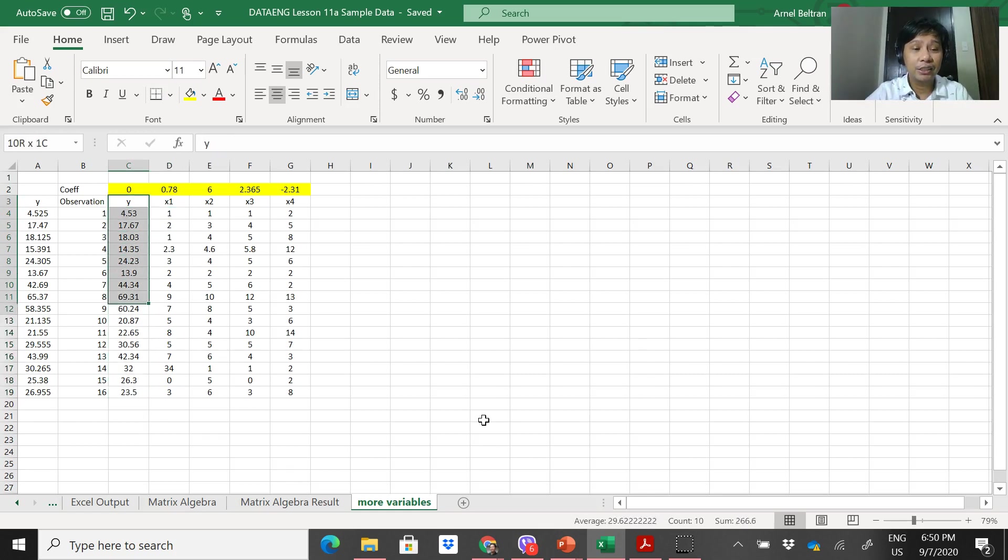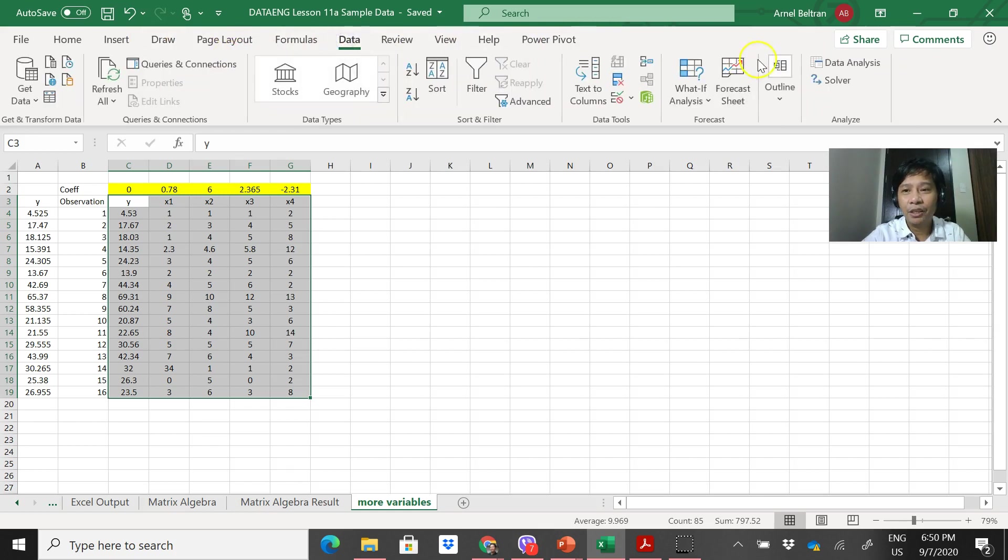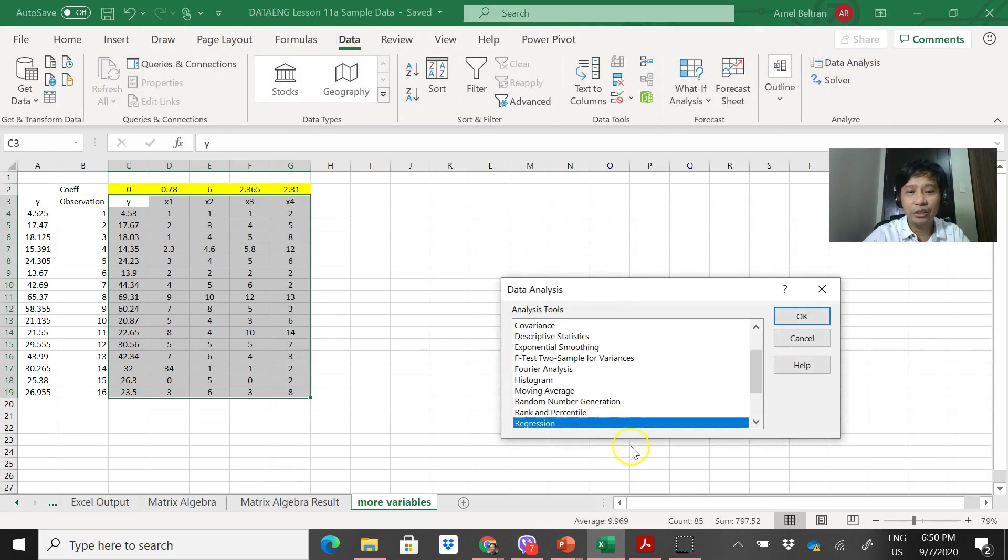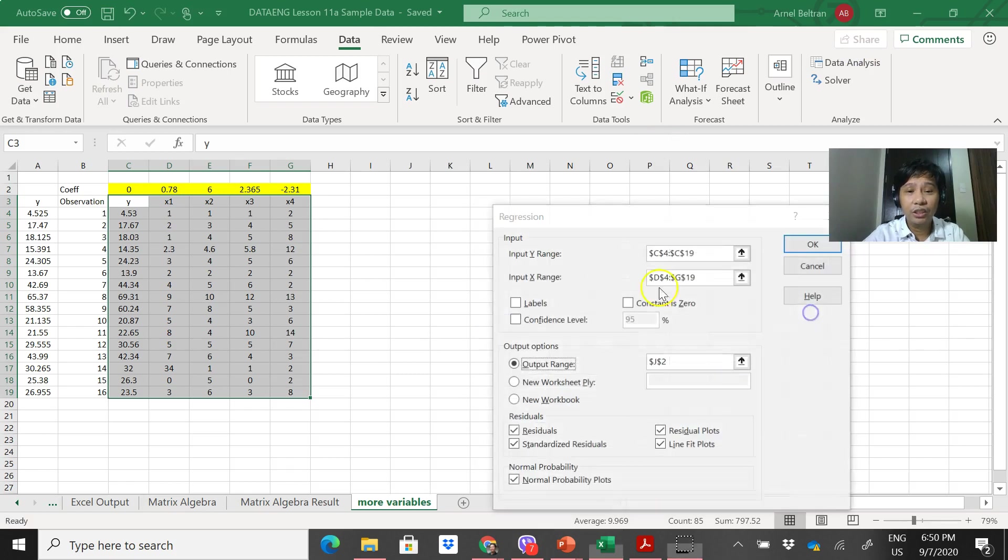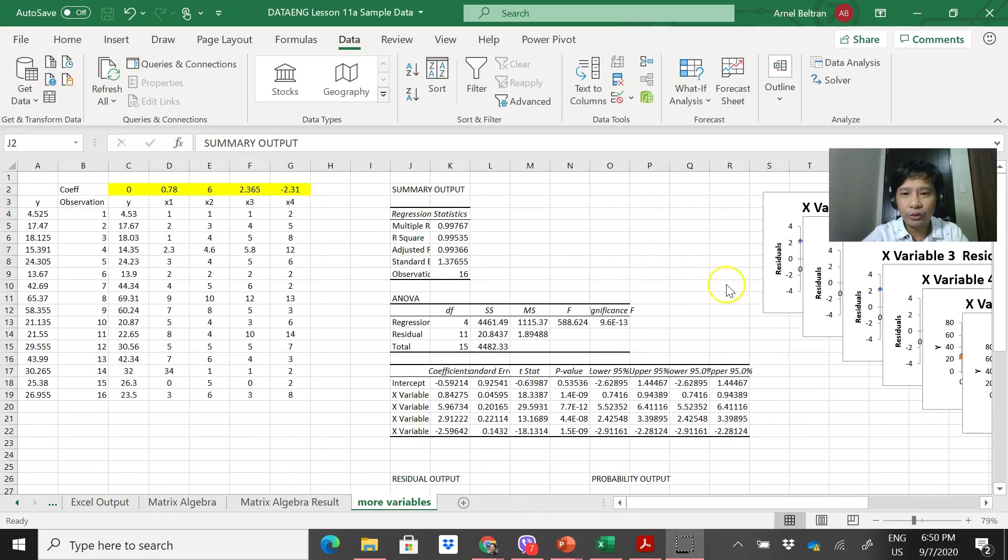So these are the coefficients, then I have the predicted value. And I gave, for example, these are the experimental data for y. So this is now what we'll test - to see if the linear regression for multiple variables, for more than 2, will work. So let's not look at the data. Data Analysis, so it's the same - Regression.